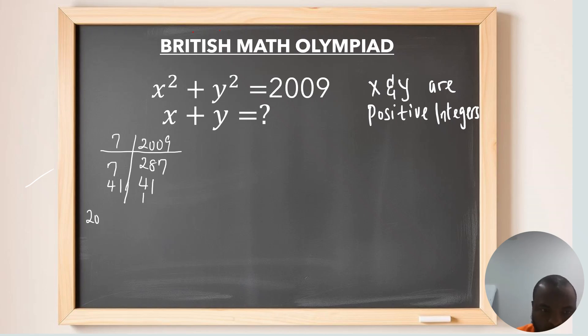This means that 2009 is equivalent to 7 times 7 times 41. Or you can rewrite this as saying 7 squared times 41. This is what we need. Don't forget that x and y are positive integers.